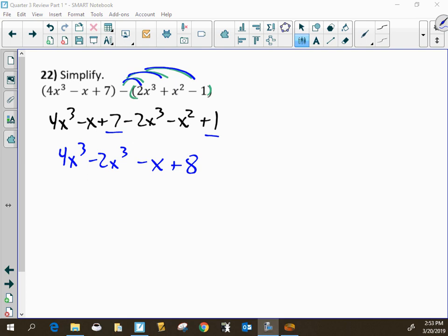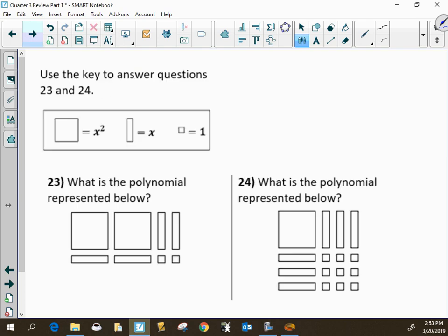All right, so next up is 23. So this is just very basic. Looking at if this is an x squared, then there's 2 of those, so that's 2x squared. If this is an x, then there's 1, 2, 3, 4 of those in the singles. So this one over here would be x squared plus 6x plus 9.